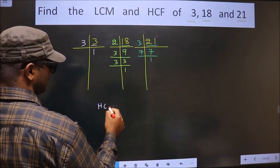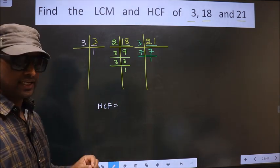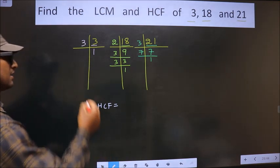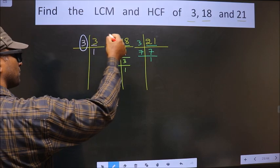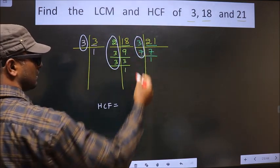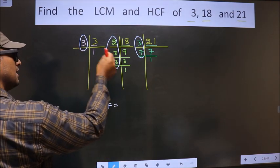So now our HCF is the product of numbers that are present here and here and also here. So now we should find the numbers that are present in these 3 places.